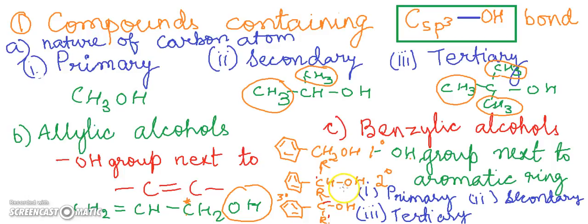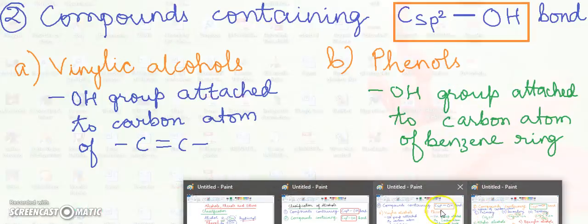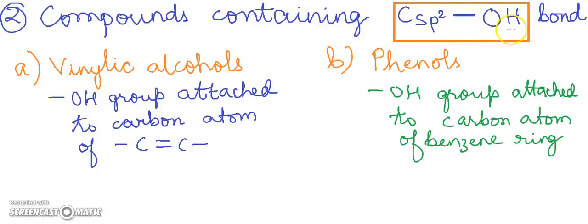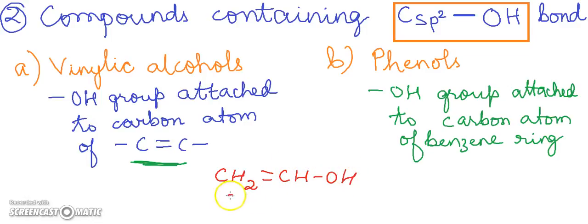Next we have compounds that contain the carbon atom with sp2 hybridization where the hydroxyl group is attached. There are two types: vinyl alcohols and phenols. In vinyl alcohols, the OH group is attached to a carbon atom of the double bond. In phenols, the OH group is attached to a carbon atom of the benzene ring. In the example of vinyl alcohol, we have the double bonded carbons and on the vinyl carbon the OH group is attached — this is your vinyl alcohol.